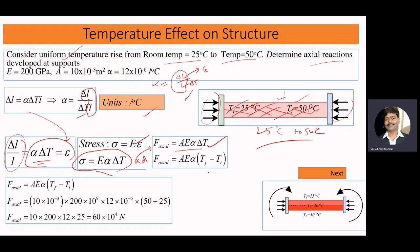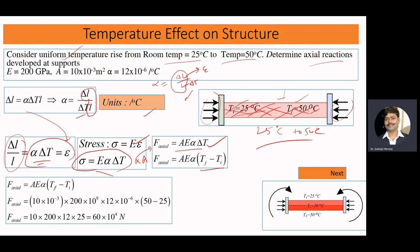Here ΔT is basically T_final minus T_initial. This axial force will basically create support reactions. From this equation we can calculate how much axial force or how much axial reaction is developing in the system.